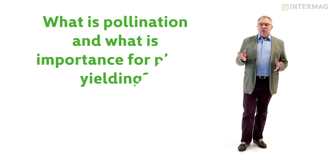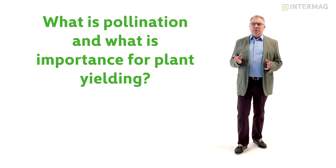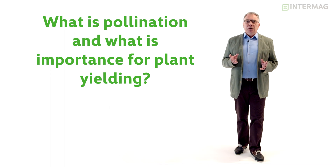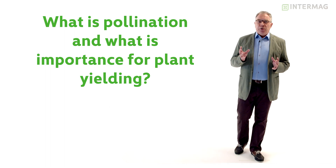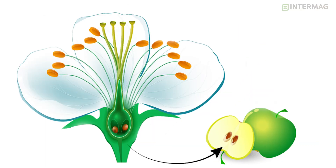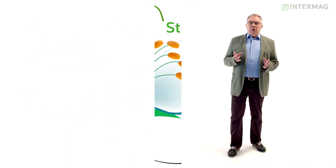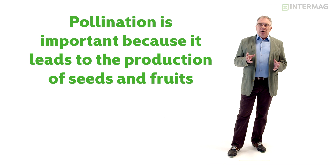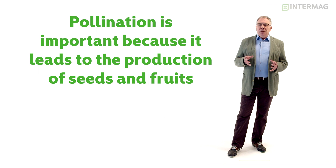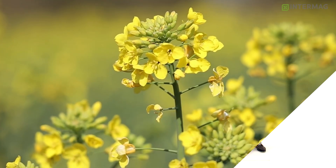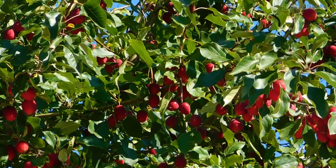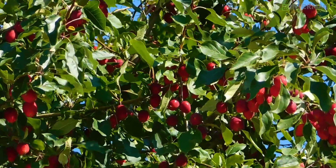What is actually the pollination process, and what is the importance of this process to plants and plant yield? Pollination is a natural process of transfer of pollen grains from the anther to the stigma. Pollination is important because it directly leads to production of seeds and fruit, which means it directly affects yield.